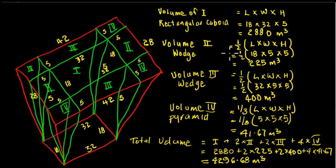And we have two of those, two of wedge 2, two of wedge 3 there. And then finally we have the four corners, a pyramid at each corner, which is a third length times width times height, which is one third times 5 by 5 by 5, which turns out to be 41.67 cubic meters.